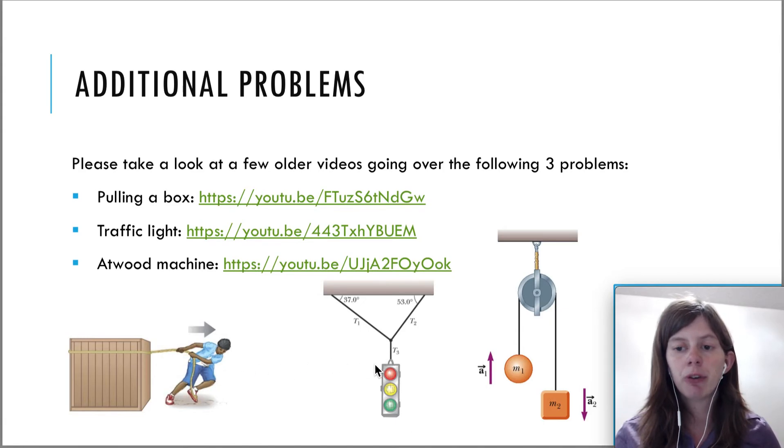The second problem here, the traffic light, is your typical problem that you encounter in physics one, where you have to find the tension in each rope. And then the third one here is called the Atwood machine. And you can find the tension in the rope, and also the acceleration of the masses there over this pulley here.